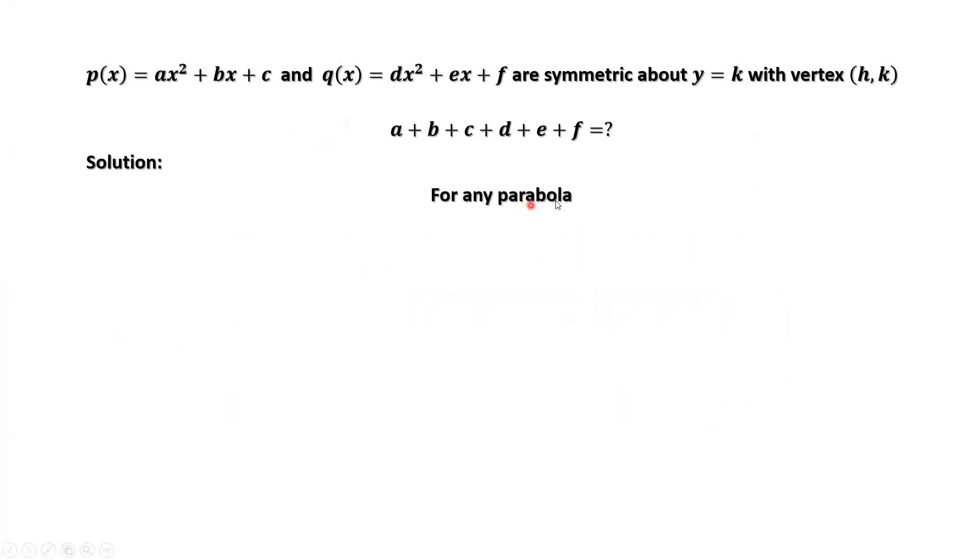For any parabola, for example, P of x equals A x squared plus B x plus C with vertex h, k, we can rewrite P of x as A times x minus h squared plus k. A and this A are the same A, k is the same k here, h the same h here.